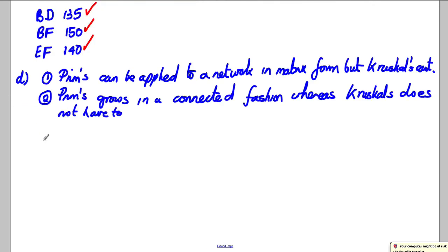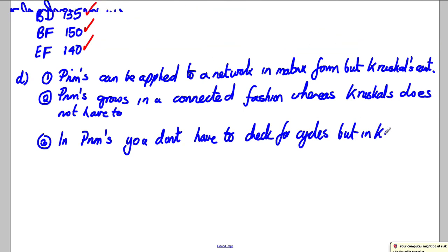Okay and another example, sort of a corollary of this in a way, is that Prims, you don't have to check for cycles because it grows in a connected fashion. You don't have to check for cycles but in Kruskal's you do. So in Prims, you don't have to check for cycles but in Kruskal's you do.